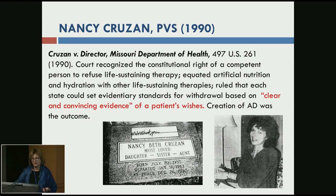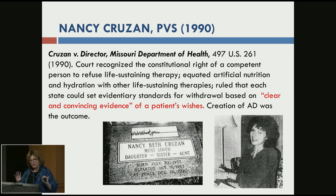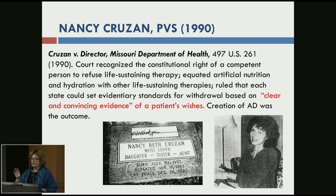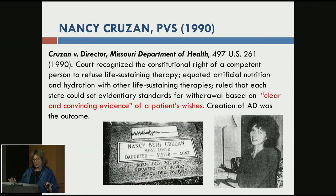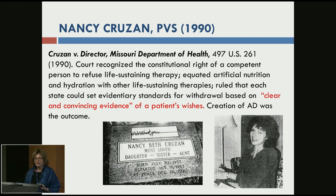The Nancy Cruzan case in 1990 recognized the right of a competent person to refuse life-sustaining therapy. It was the first case in which artificial nutrition and hydration were considered life-sustaining therapy. The parents were able to present evidence of what her patient's wishes would be — a substitute decision-making case — but it also made clear that more attention needed to be paid to advance directives. Cruzan was in a terrible car accident, which is how she wound up in a persistent vegetative state.